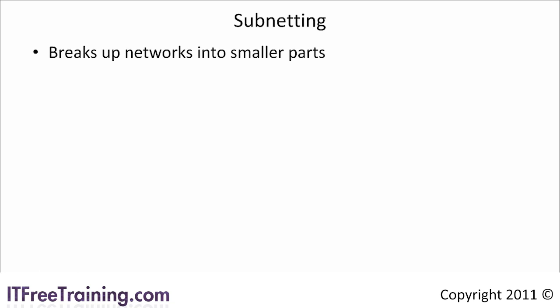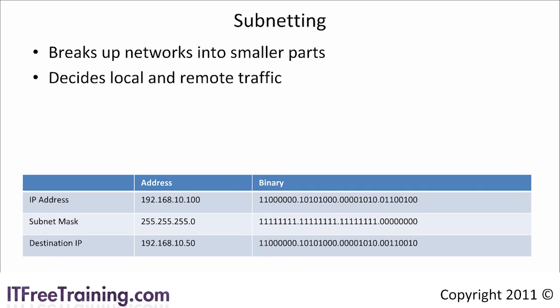Subnetting allows you to break up a network into smaller parts. It is also used to determine which traffic is local traffic and which traffic is for remote networks. Unfortunately, once you start subnetting your network, you will need to start working in binary. To see how subnetting works, consider this example. The IP address, subnet mask, and destination IP address are displayed in binary.